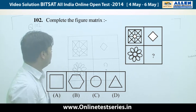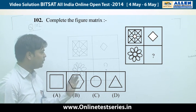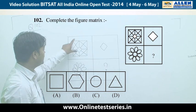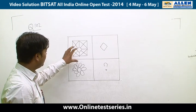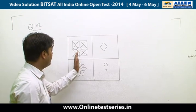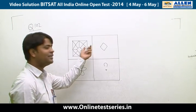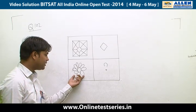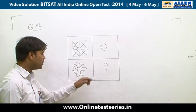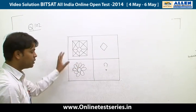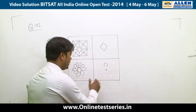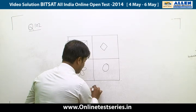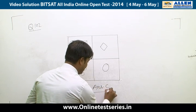Question 102 is from figure matrix. In this figure, the innermost portion is kept and the rest is erased. Considering the picture, all the outer portion should be erased, and the innermost portion is a circle. So the answer is C.